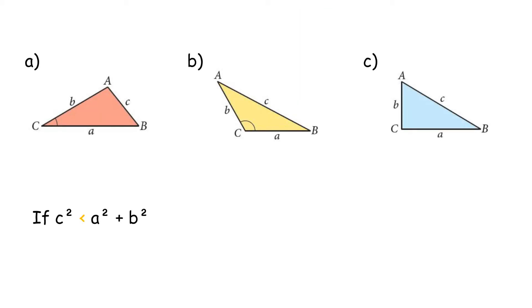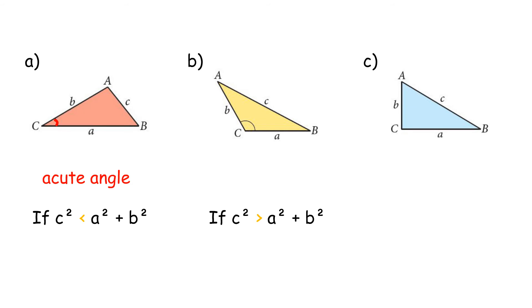A: If c² < a² + b², then the angle opposite to side c is an acute angle. B: If c² > a² + b², then the angle opposite to side c is an obtuse angle.